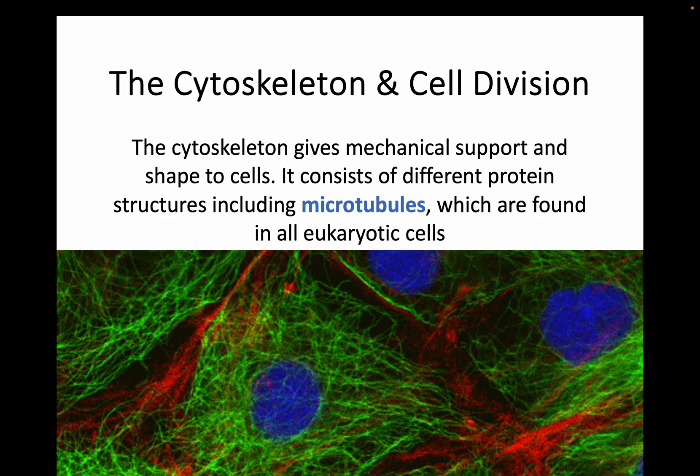When we talk about the cytoskeleton, essentially it is the sort of inner mechanics of a cell. The cytoskeleton gives mechanical support and shape to cells. It's made of different protein structures, including something called microtubules, which you can see in this pretty incredible fluorescence microscopy picture here in green. We've got the nucleus in blue and all these little microtubules that go all the way throughout the cell, giving that support but also keeping that shape going. These microtubules are going to be really important both in terms of how different organelles move around the cell, but also in cell division itself.